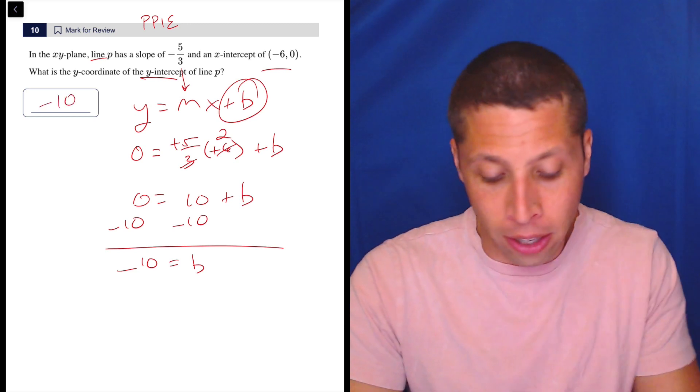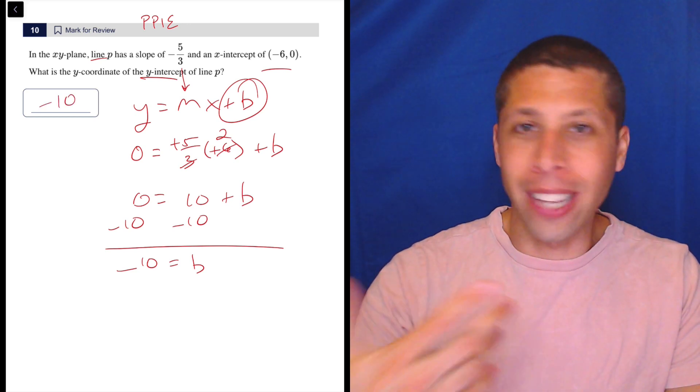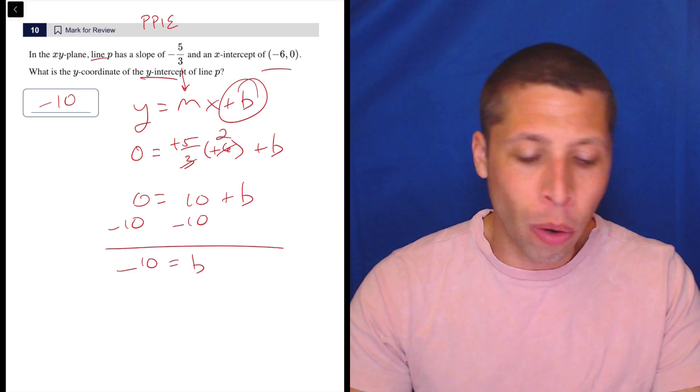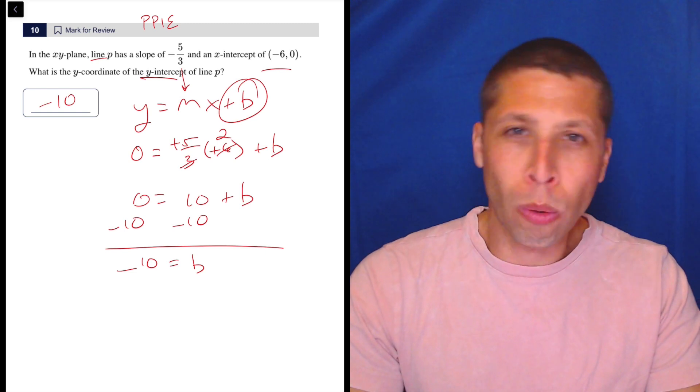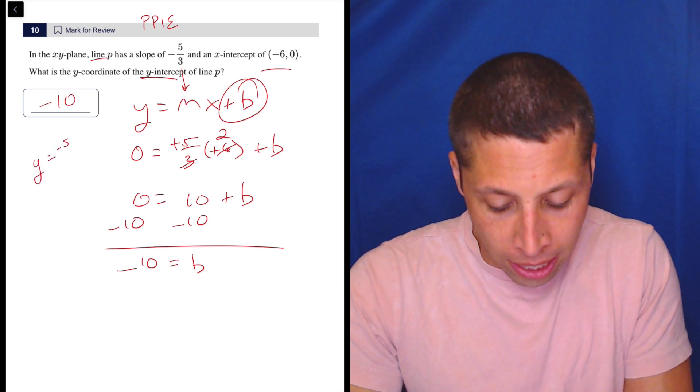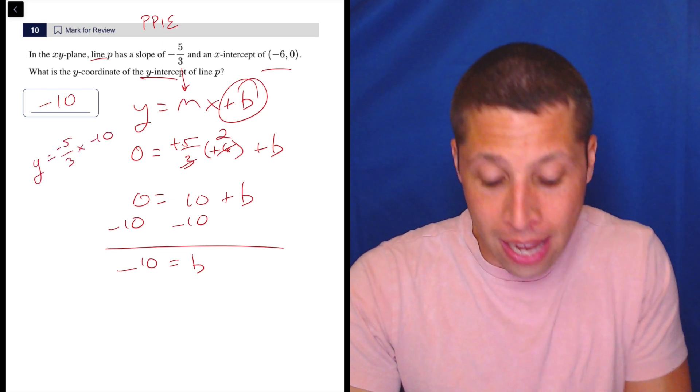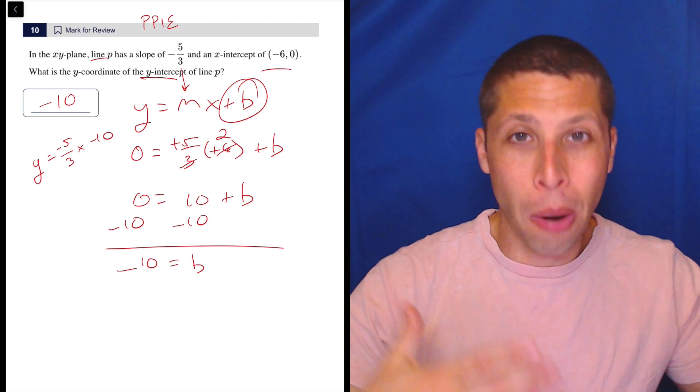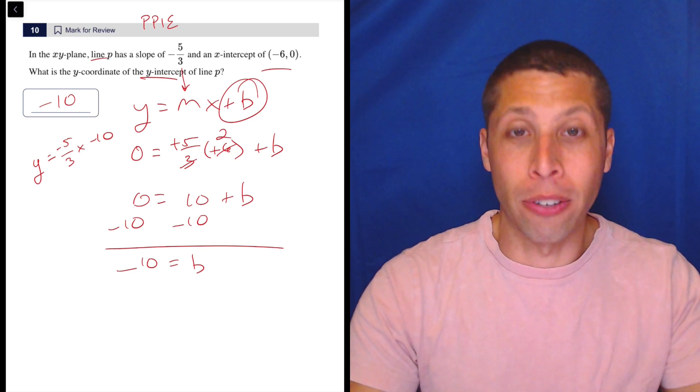There's nothing else to be done here. If for some reason they wanted like another point or I don't really know, then I might go to Desmos, graph the line that I found, you know, in this case, y equals negative 5 thirds x minus 10, and then use the properties of the line on the graph to kind of figure it out. I might do that.